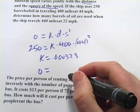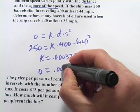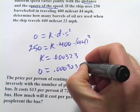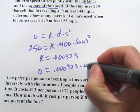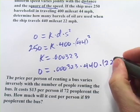When the ship travels 440 miles at 22 miles per hour. So we'll put in our K, .000323, times the distance 440, times the speed squared, so 22 squared.